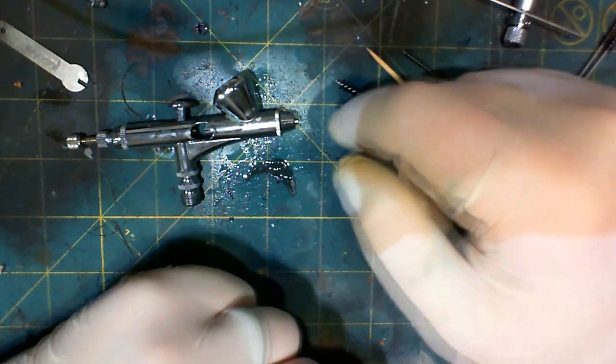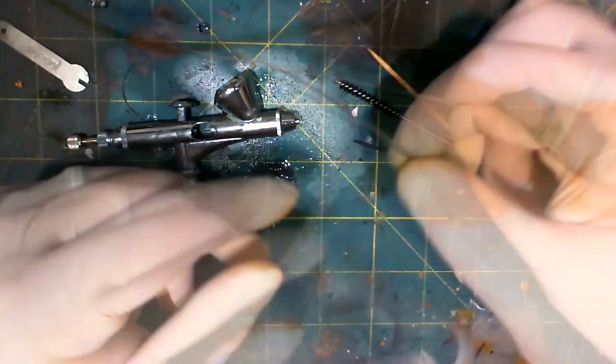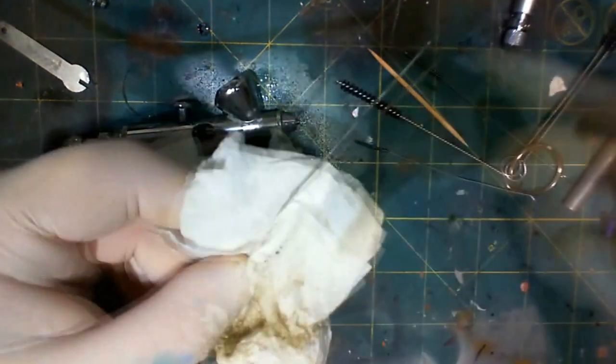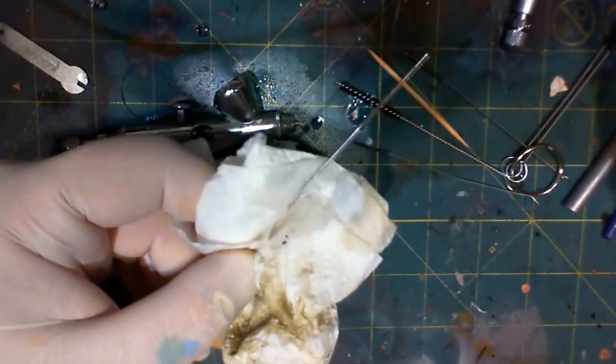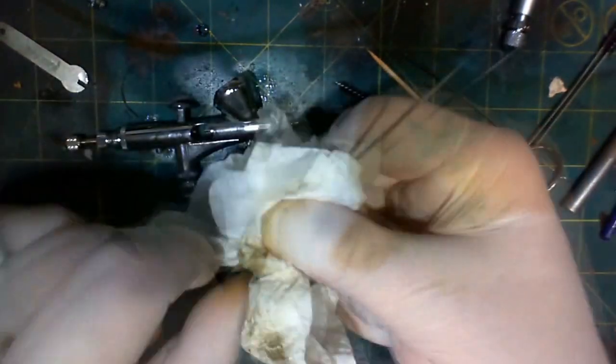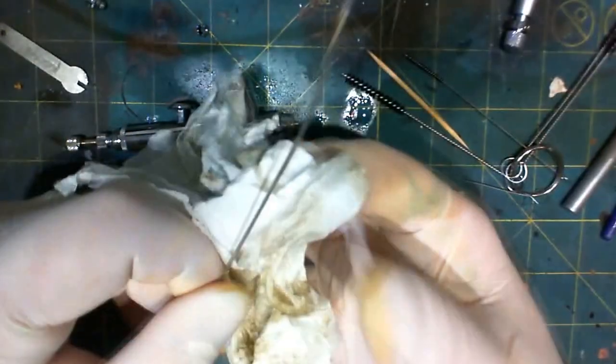And then the needle. The needle is pretty simple. You just, the paint will come right off of it if you put some cleaner on a paper towel or a rag or something.